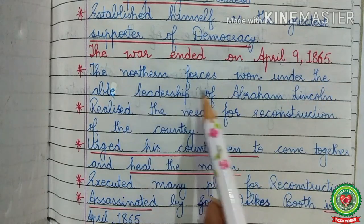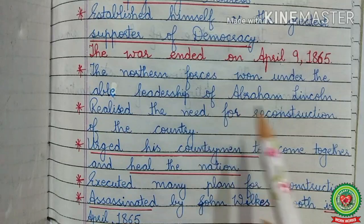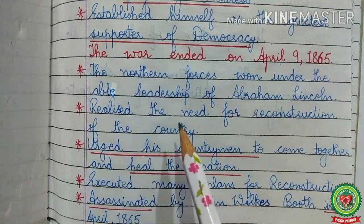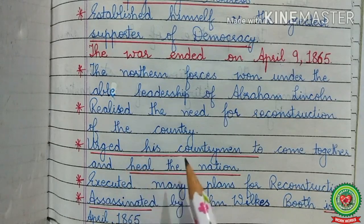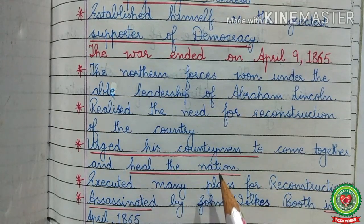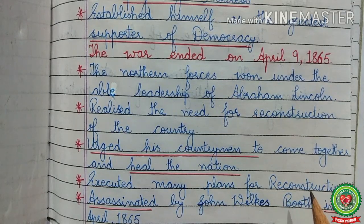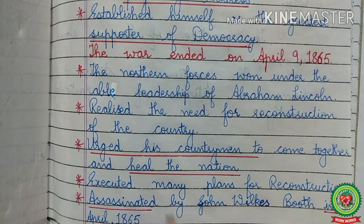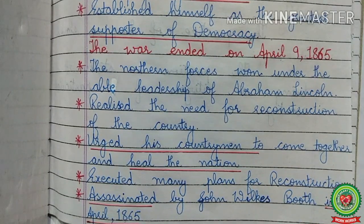The Civil War ended on April 9, 1865, and the northern forces won under the able leadership of Abraham Lincoln. He realized the need for reconstruction of the country and urged his countrymen to come together and heal the nation. He executed many plans for reconstruction, but before the implementation of all those plans, he was assassinated by John Wilkes Booth in April 1865.